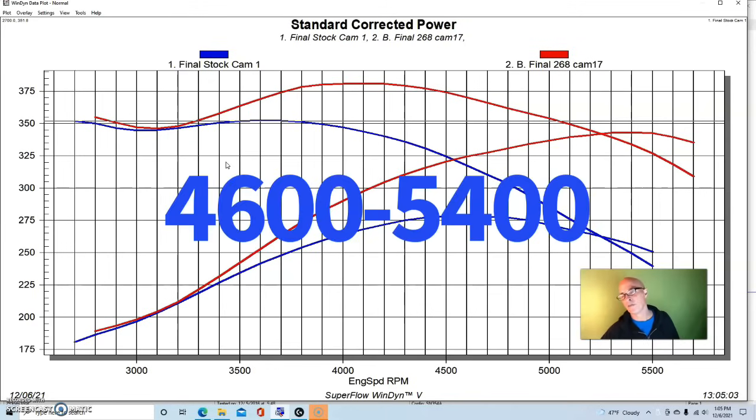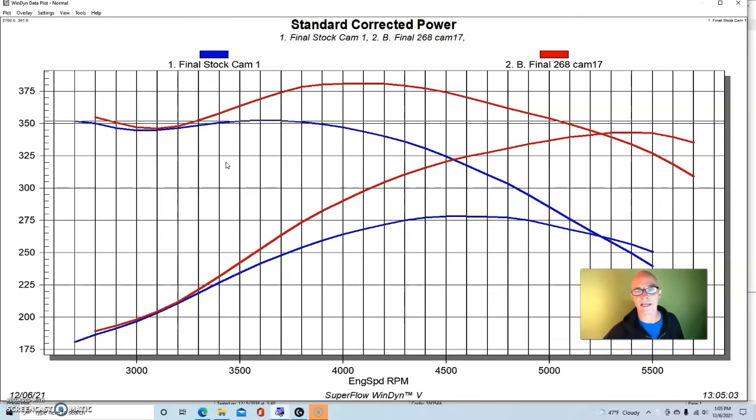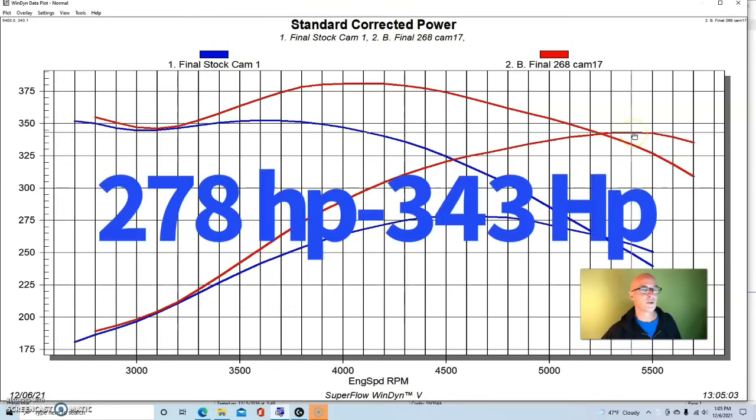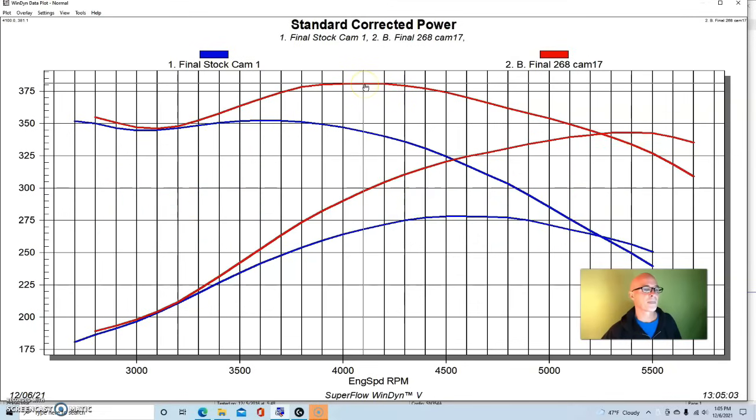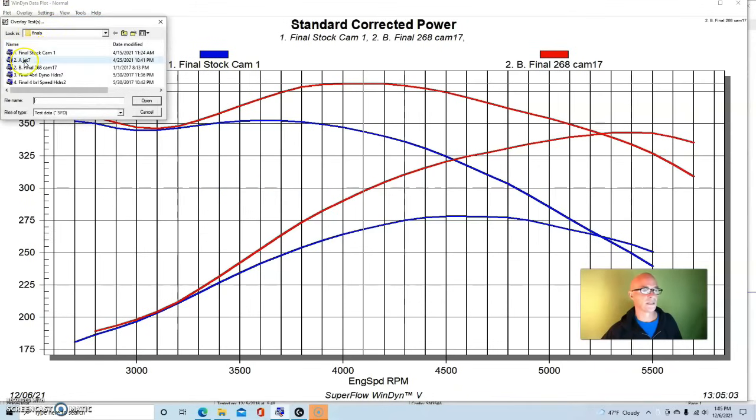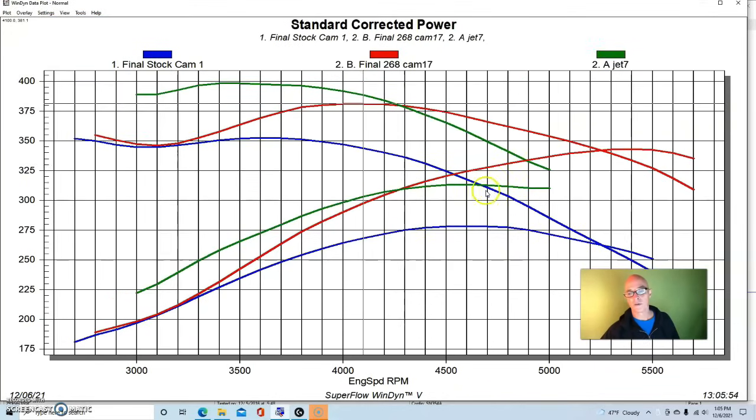out to about 5400 or 5500. So call that 900 RPM. It pushed peak power from 278 up to 343